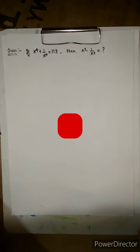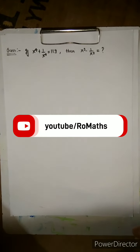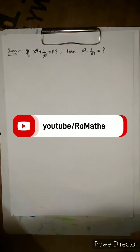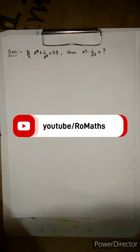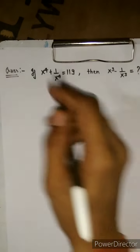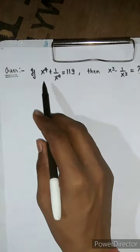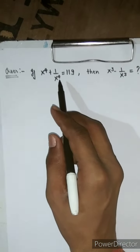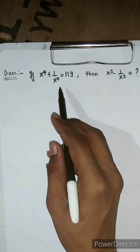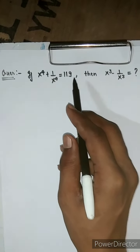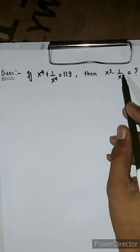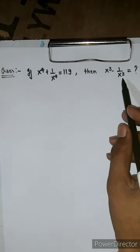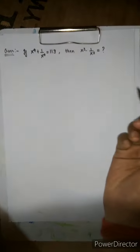Hello friends, it's me Ruhith Lohit Chadar and you are watching Ruh Maths, your favorite YouTube channel. Today we are here with another amazing question of mathematics: if x raised to the power 4 plus 1 over x raised to the power 4 is equal to 119, then we have to find the value of x² minus 1 over x raised to the power 3. So how to solve it? Let's see.